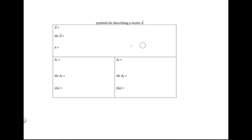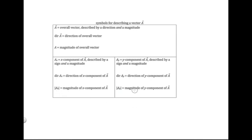Continuing with the summary: what do each of these symbols mean? The symbol for an overall vector can only be described by both a direction and a magnitude, not just a magnitude by itself. Your textbook might use a letter with an arrow or write the letter in boldface. There is also a symbol for the direction of the overall vector and a symbol for its magnitude. The x component is described by a sign and a magnitude — don't leave off the plus or minus sign. There are also symbols for the direction and magnitude of the component, and similarly for the y component.